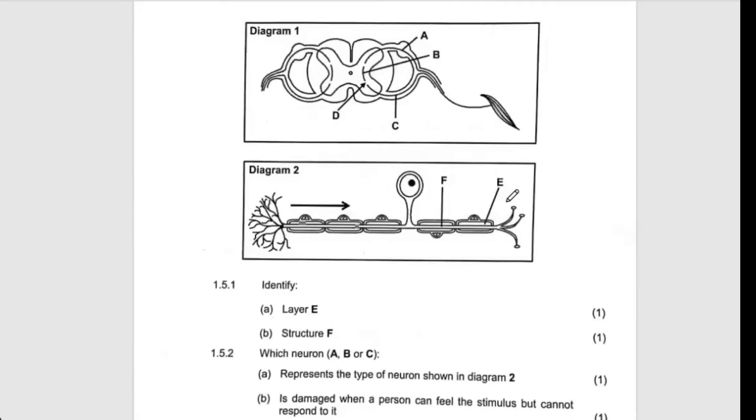This one becomes the myelin sheath, and then this one becomes, because this is the direction of the neuron, then this one becomes direction of the impulse, and this is the cell body. So the part which takes the impulse away from the cell body is the axon, so this side becomes the dendrite.